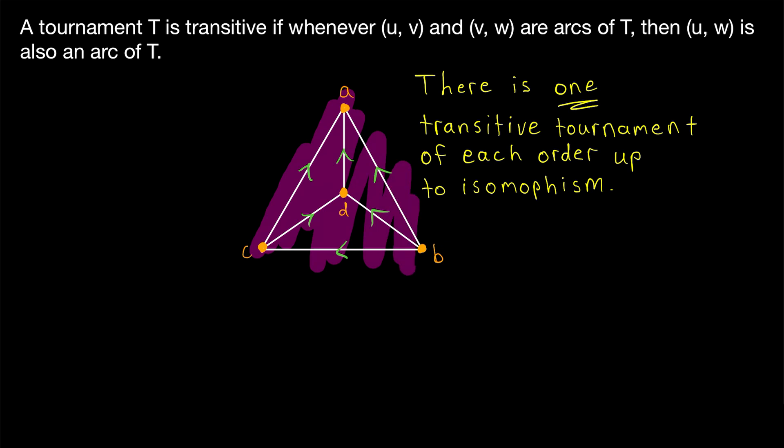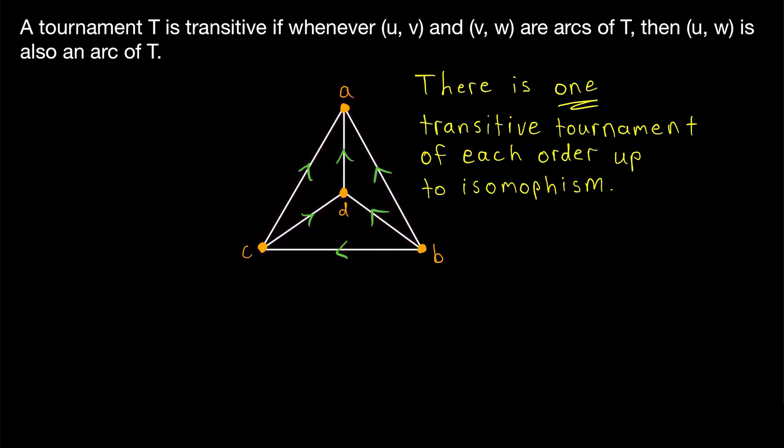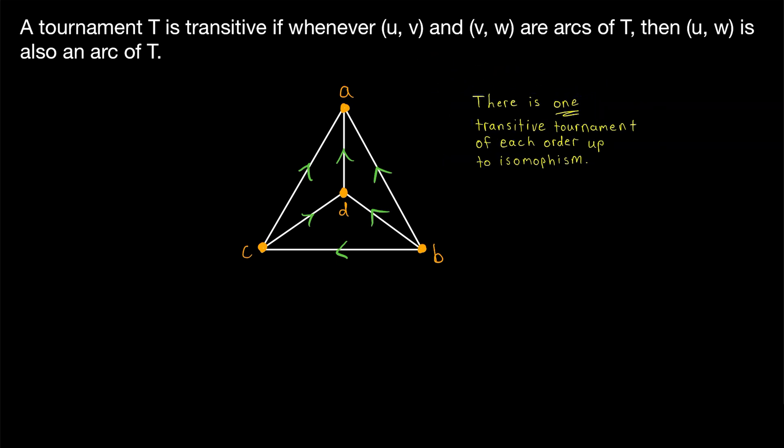All of the others are isomorphic to this one. Similarly, for a seven-vertex transitive tournament, there is only one. And again, that's up to isomorphism. So of course, the transitive tournaments could be labeled differently, so they wouldn't technically be equal, but they have the same structure. They're isomorphic. The neat properties of transitive tournaments don't stop there.